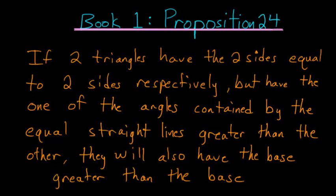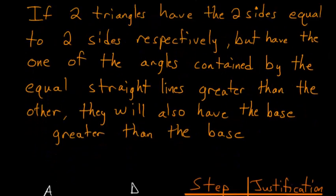For Book 1, Proposition 24 of Euclid's Elements: if two triangles have two sides equal to two sides respectively, but have one of the angles contained by the equal straight lines greater than the other, they will also have the base greater than the base.